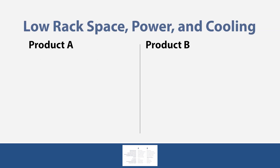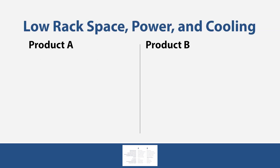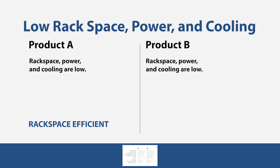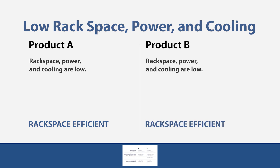Lower rack space, power, and cooling: Both Product A and Product B have low rack space, power, and cooling requirements — both are rack space efficient.